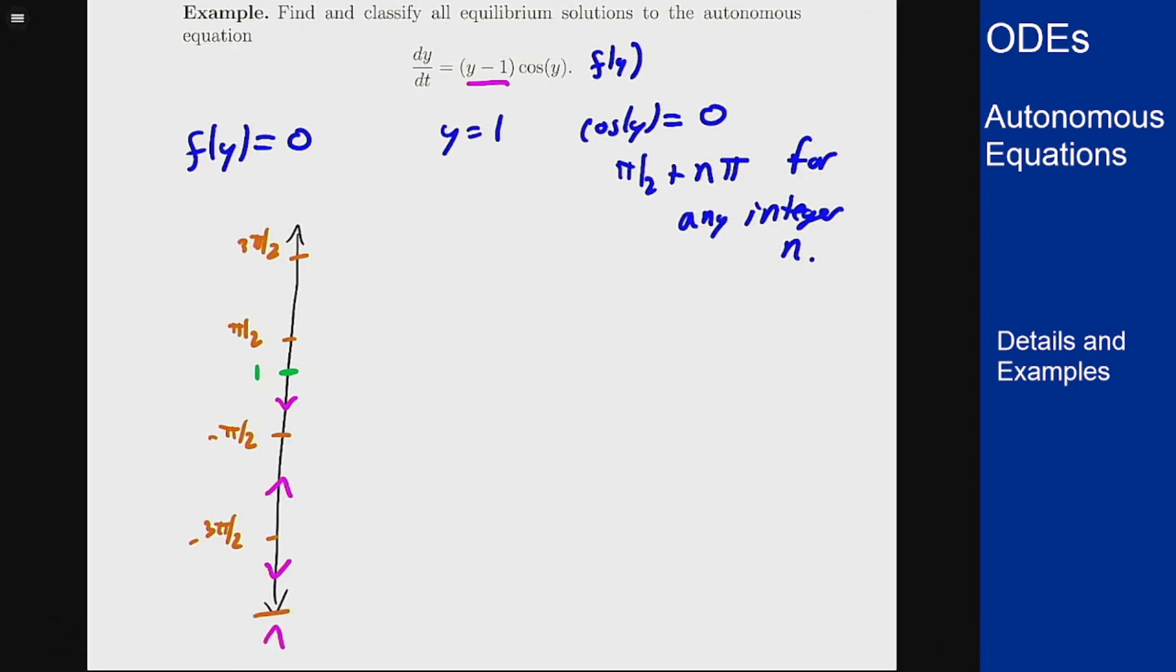The same thing happened on the other end but I get one extra switch from the y equals 1 term. So if I plug in something slightly bigger than 1 that's still less than π/2, y minus 1 will be positive and cosine will also still be positive because it stays positive all the way up to π/2. So this will be an up arrow here and again cosine switches at every zero. So I'll get down here, up here, down here, and so on.